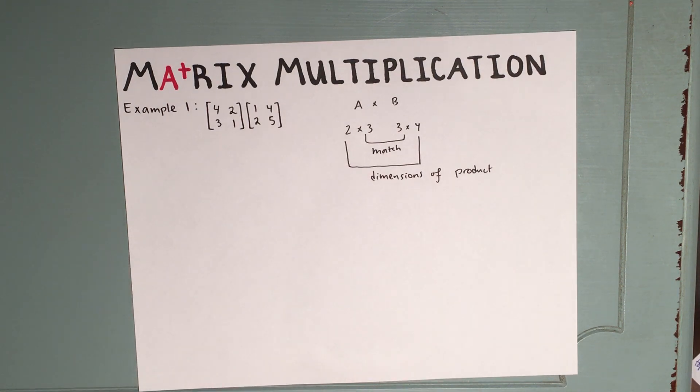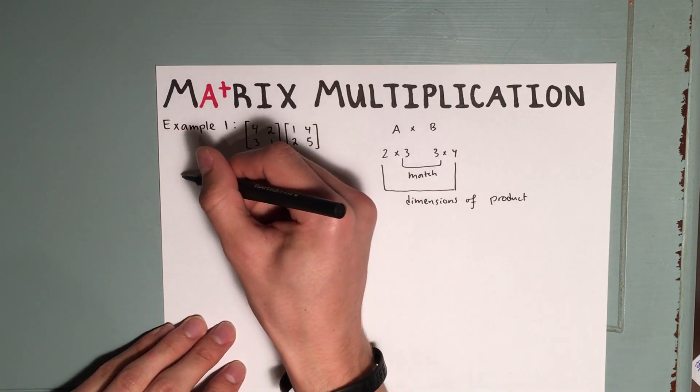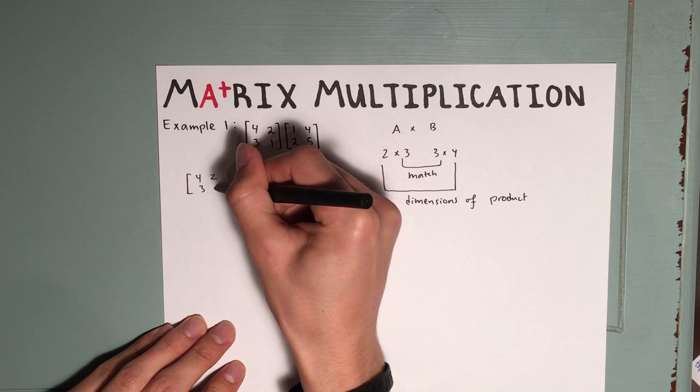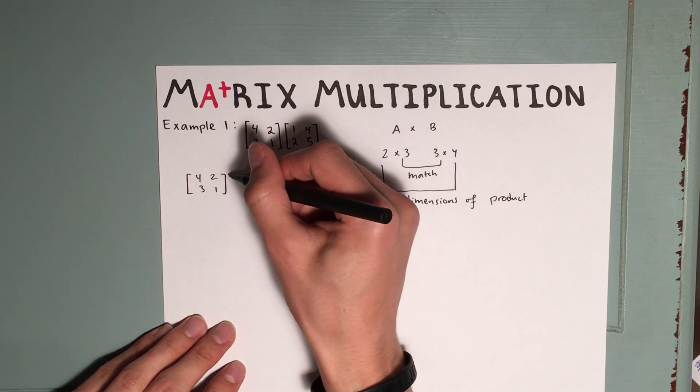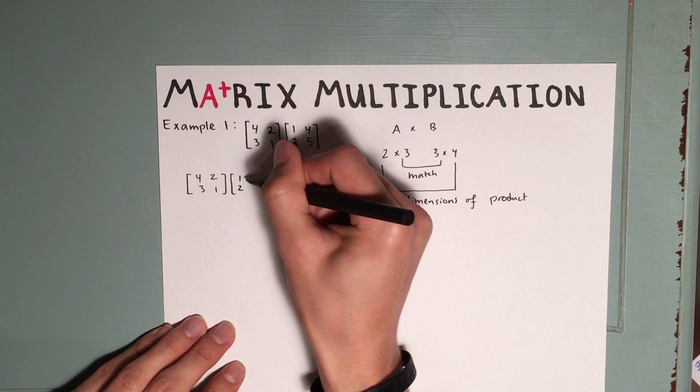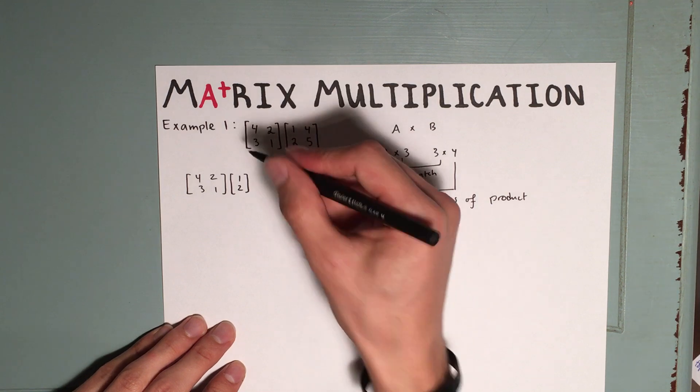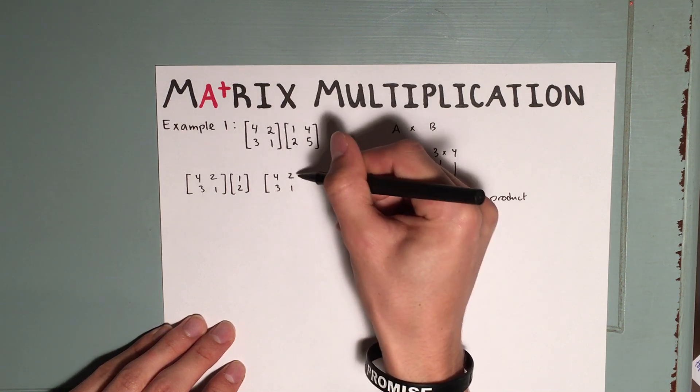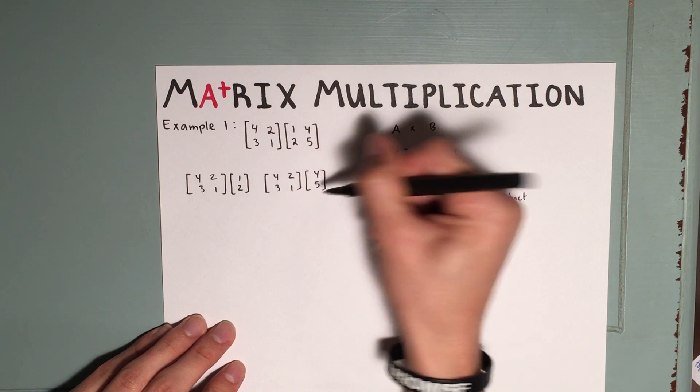We're going to want to build the product one column at a time. So we'll start by writing down the first matrix again. So that's 4, 2, 3, 1. And then we're just going to write down the first column of the second matrix. Right next to that, we'll do the same thing, but with the second column of the second matrix. 4, 3, 2, 1 and 4, 5.